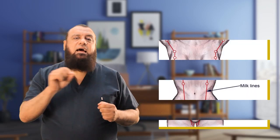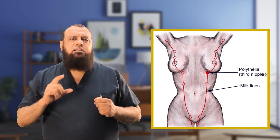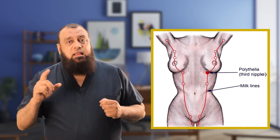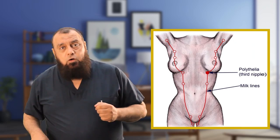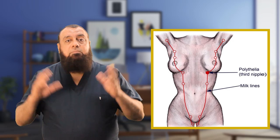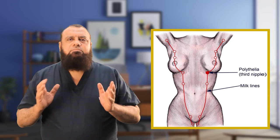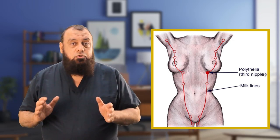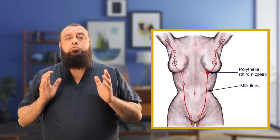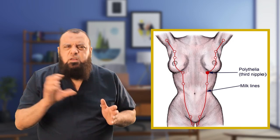Regarding the development of the breast: the breast develops from what we call the ectodermal milk line or milk ridge, which goes from the axilla to the groin. Most of this line disappears except over the breast region to produce the breast. So the breast is ectodermal in origin.